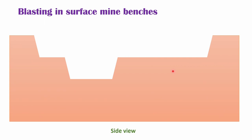So, blasting surface mine benches. In this picture, we can see clearly that bench number one is already formed. Now the work is going on in the second bench and we are going to extract this portion of the rock mass for moving the bench in this direction. So for that, we have to drill the blast holes like this. Here we are viewing from the side view — that is two rows of blast holes. This is row number one and this is row number two.